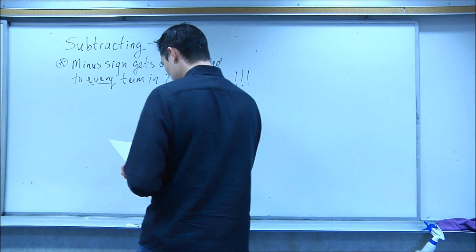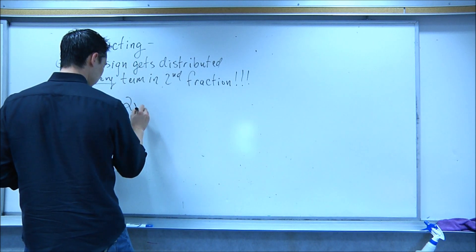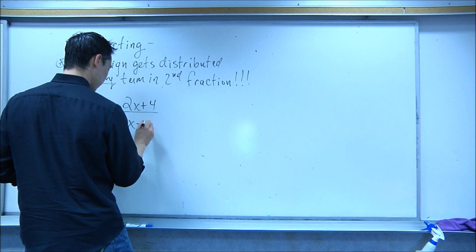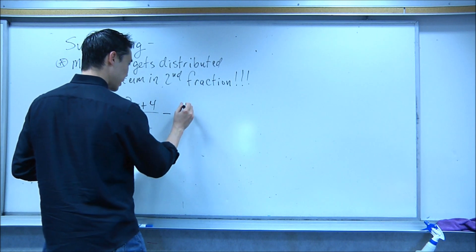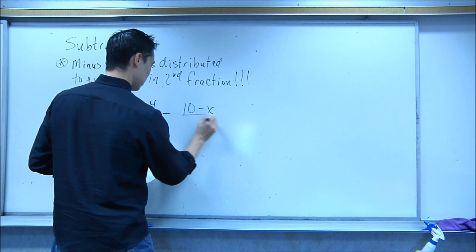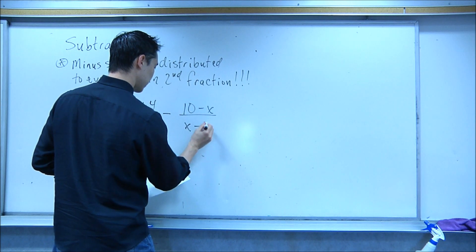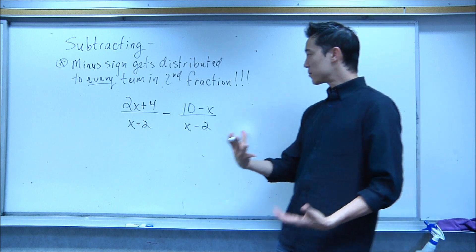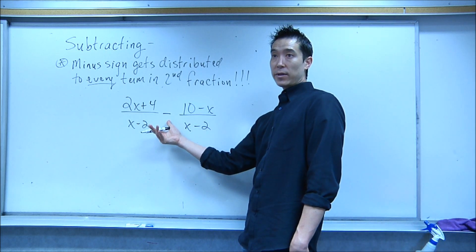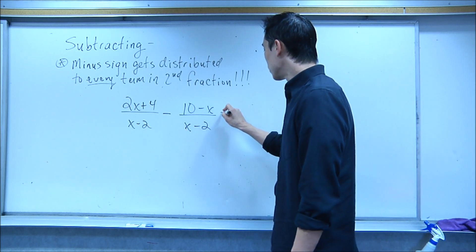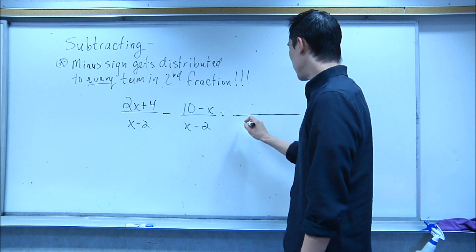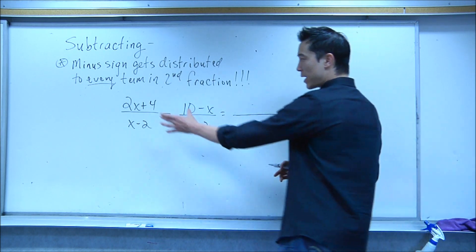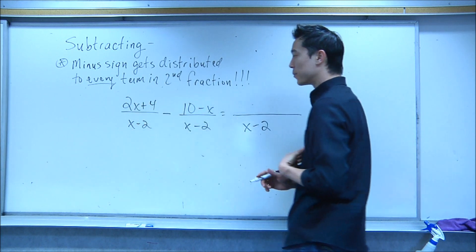And let's see what I mean. Let's say we have this example. 2x plus 4 over x minus 2 minus 10 minus x over x minus 2. Here's a perfect example. So it's just like the problems we've been doing, but now I have a minus sign between them. So your rule is, just like before, you keep the x minus 2, and then we want to combine the numbers in the top.